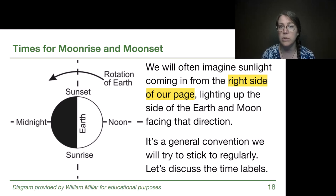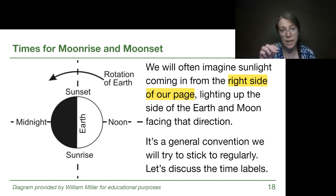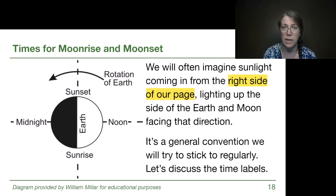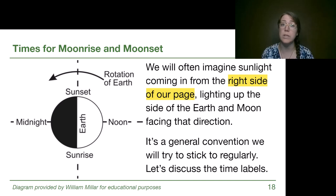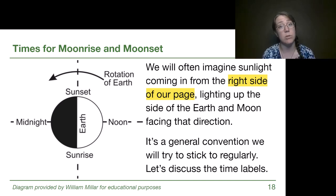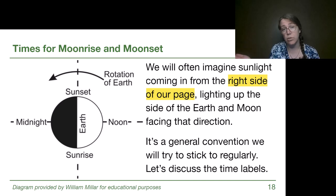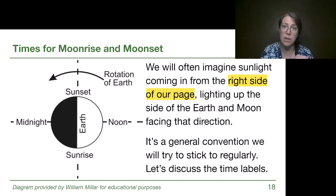Noon is when we are directly facing the direction of the sun — if we were standing on Earth along that noon line, the sun would be as high as it's going to get in our sky, directly overhead only if we're at the equator. This diagram looks down from the north pole of the Earth. As the Earth rotates counterclockwise in this view, time passes and when we go from the daytime side to the nighttime side, we're experiencing sunset.